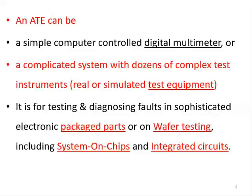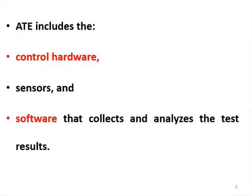Automatic test equipment is used for testing or diagnosing faults in sophisticated electronics packages. For instance, it is used for testing wafers — the base on which transistors, diodes, or integrated circuits are produced — made from semiconductor materials such as silicon or germanium. It is also used for testing system-on-chips, which is a single integrated circuit that can function as a standalone computer, as well as testing integrated circuits both small and large.